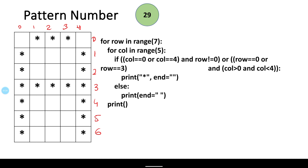To draw these stars in the form of a matrix, we make use of 4 nested loops. I have used 7 as the parameter to range for rows and 5 for the columns. So the row loop runs from 0 to 6 and the column loop runs from 0 to 4, which justifies the numbering. These are the nested for loops for the matrix structure.